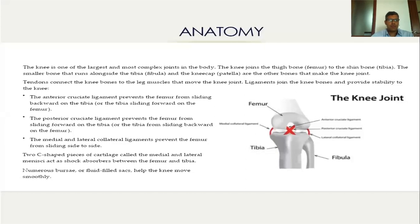The knee joint is one of the largest and most complex joints in the body. The bones that form it are the femur, and the smaller bone is the tibia, and the kneecap is the patella. There are at least four ligaments around the knee that provide support: the anterior cruciate ligament, the posterior cruciate ligament, the medial collateral ligament, and the lateral collateral ligament.